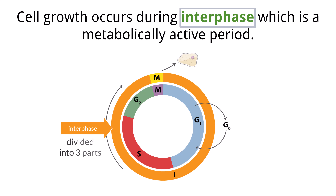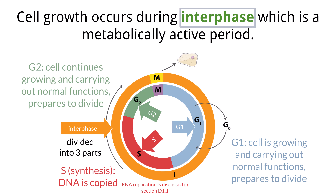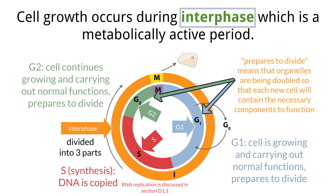Interphase is further divided into three parts: G1, S, and G2. It is during interphase that the cell grows. During G1, the cell is growing — G1 follows mitosis, and the cell is the smallest at this point. S phase is the synthesis phase, and it is the time that our DNA is copied. G2 sees further growth in preparation for mitosis. It is during G1 and G2 phases that organelles are doubled, such as the mitochondria and chloroplasts.